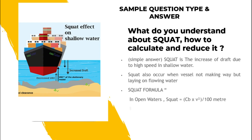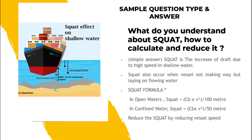What do you understand about squat, how to calculate and reduce it? In simple words, squat is the increase of draft due to high speed in shallow water. Squat also occurs when a vessel is not making way but is lying in flowing water. To calculate squat in open water, the formula is: coefficient block × vessel speed² ÷ 100 meters. In confined water: coefficient block × ship speed² ÷ 50 meters. Reduce squat by reducing vessel speed.